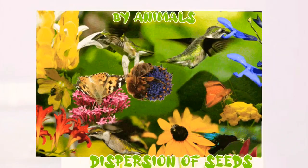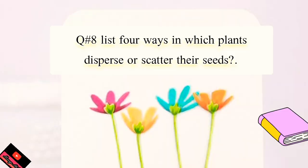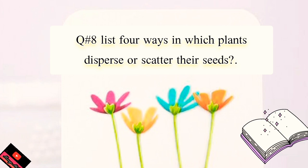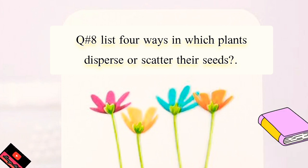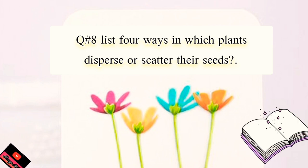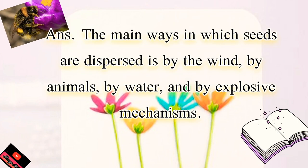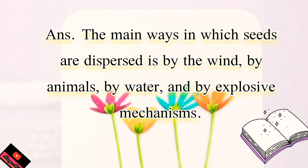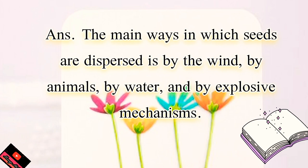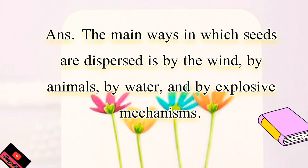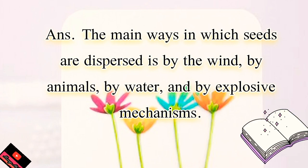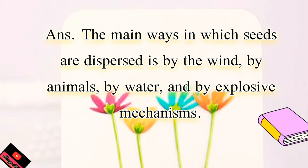Herbivores are not shown here but they play a very important role. Now, Question 8: write this question very neatly in your journal. Question 8 is: list four ways in which plants disperse or scatter their seeds. The answer is that the main ways seeds are dispersed are by wind, by animals, by water, and by explosive mechanisms. You can write these as bullets or add details from pages 44, 46, and 47.